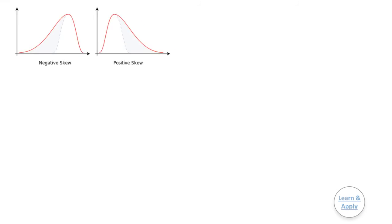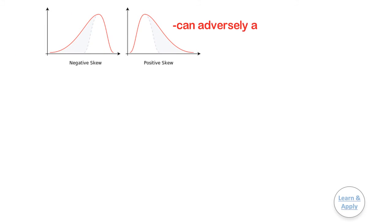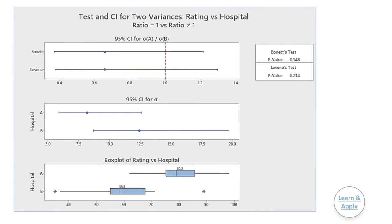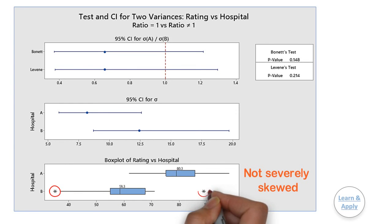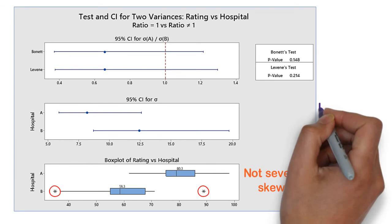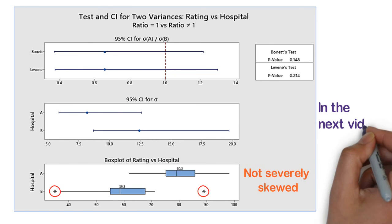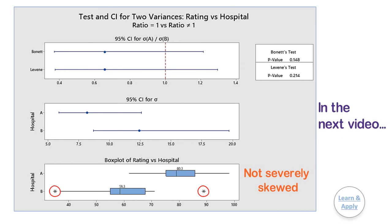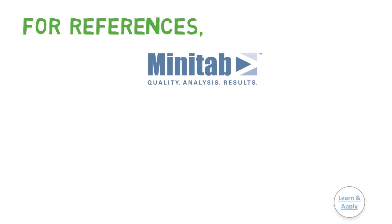Please note that skewness and outliers in the data can adversely affect your results. Use the graphs to look for skewness and to identify potential outliers. In these graphs, the data do not appear to be severely skewed, but in the box plot, it shows that Hospital B has two outliers. This is all about the two-sample variance test with a practical example. We will see the next type of hypothesis test in the next video. For references, some part of this detailed content has been taken from Minitab.